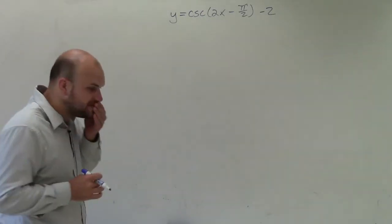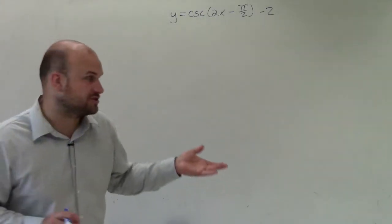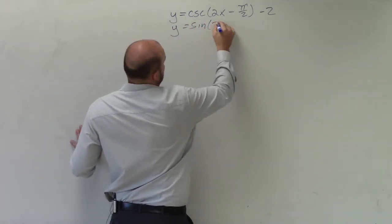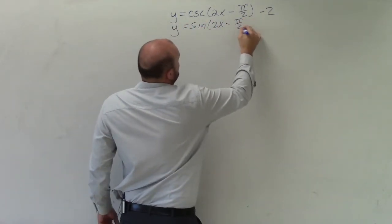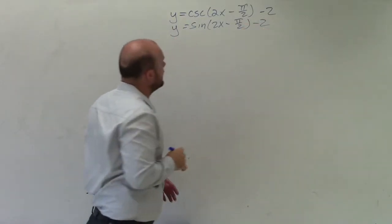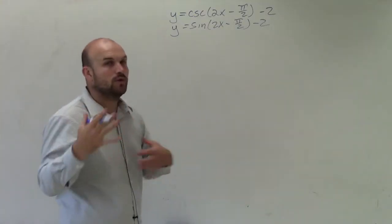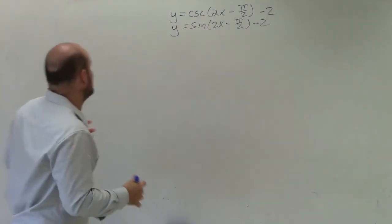To graph the cosecant function, we want to graph the sine function, which is the reciprocal function of that first. So to graph the sine function, it's helpful to understand what are all the transformations, how is this graph going to be affected.